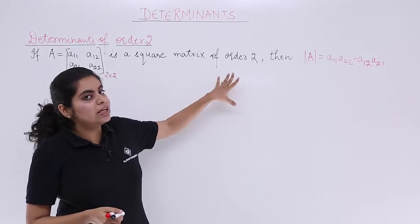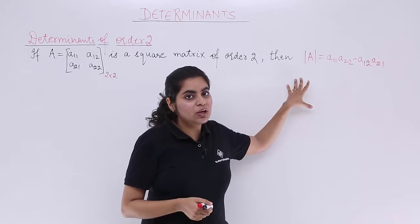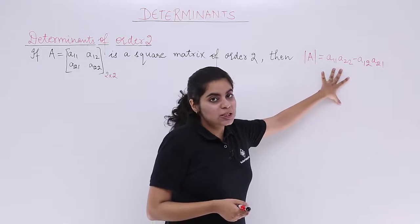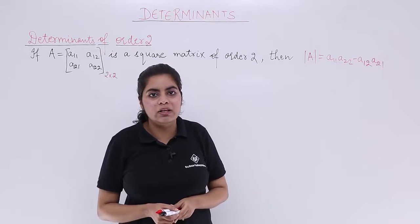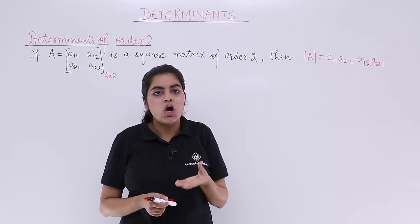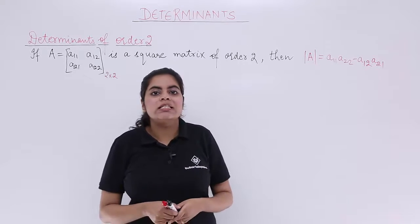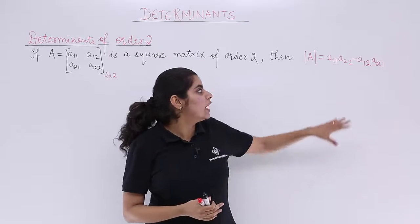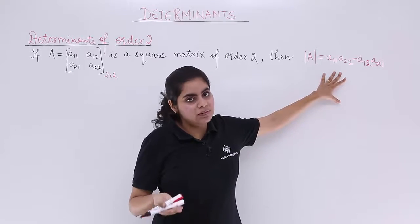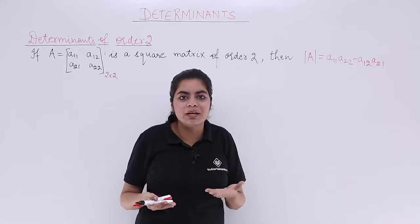So what is the determinant value for that square matrix of order 2? It is given by this expression. Remember in the first video I told you that determinant value is either a number or an expression. Since it deals with alphabetical values, the elements, here we have the expression. In the examples we'll have numbers, then we'll have the value as a number.